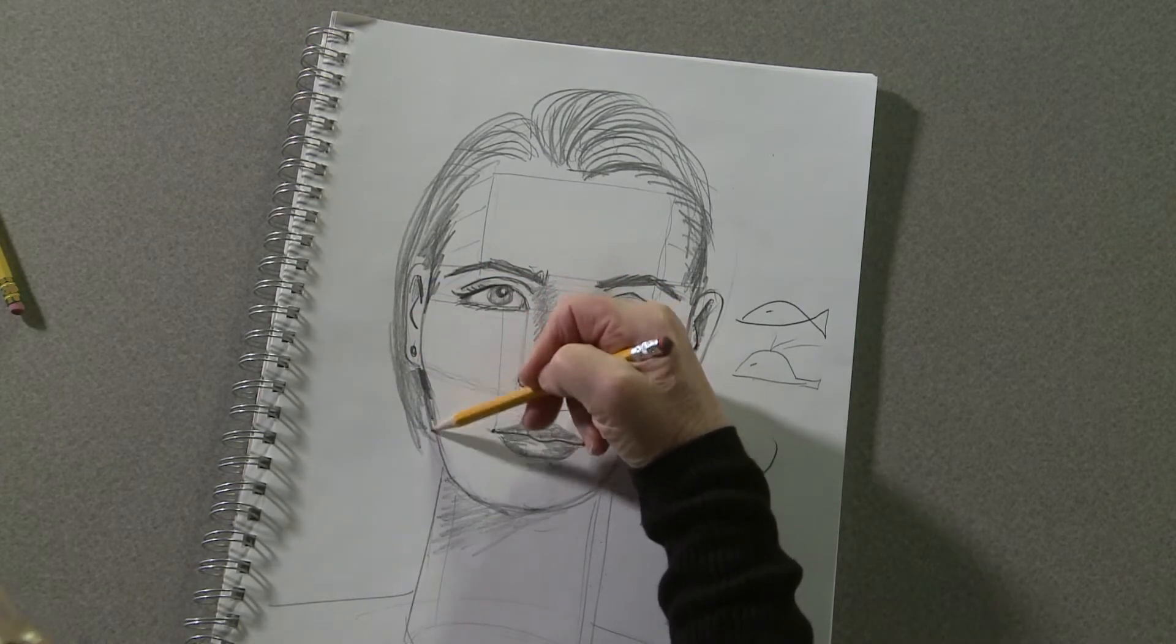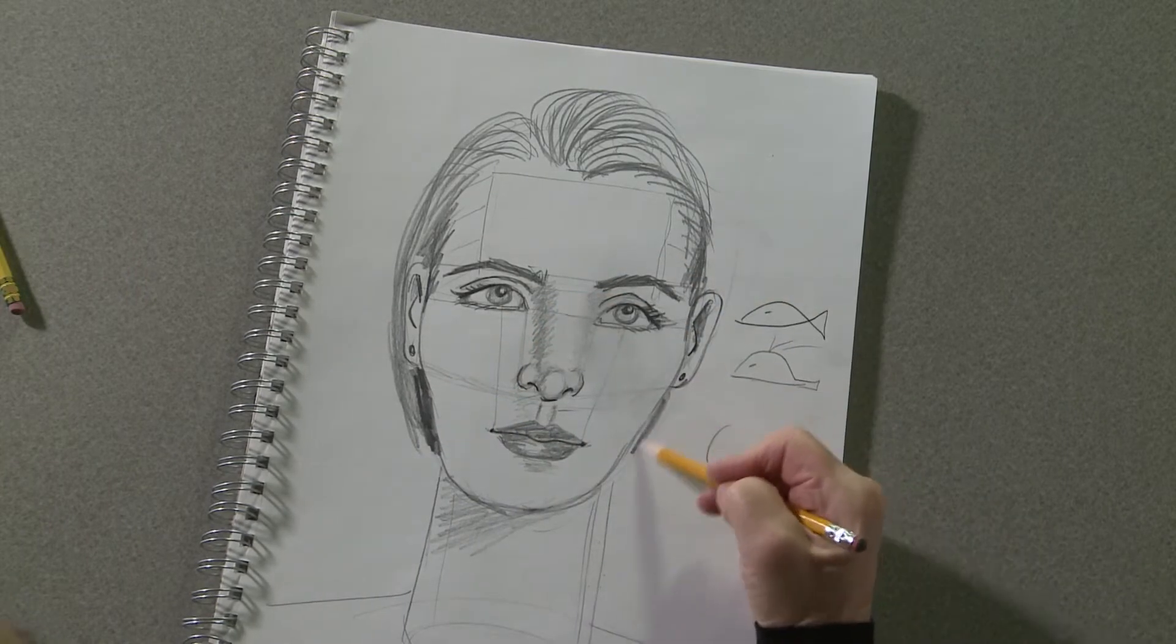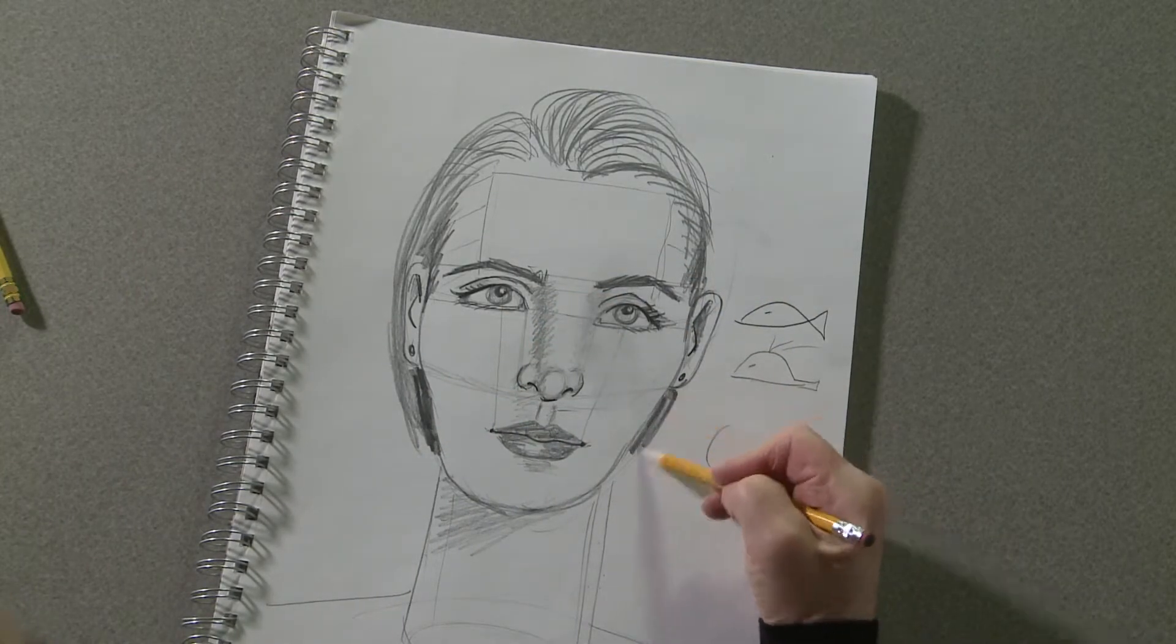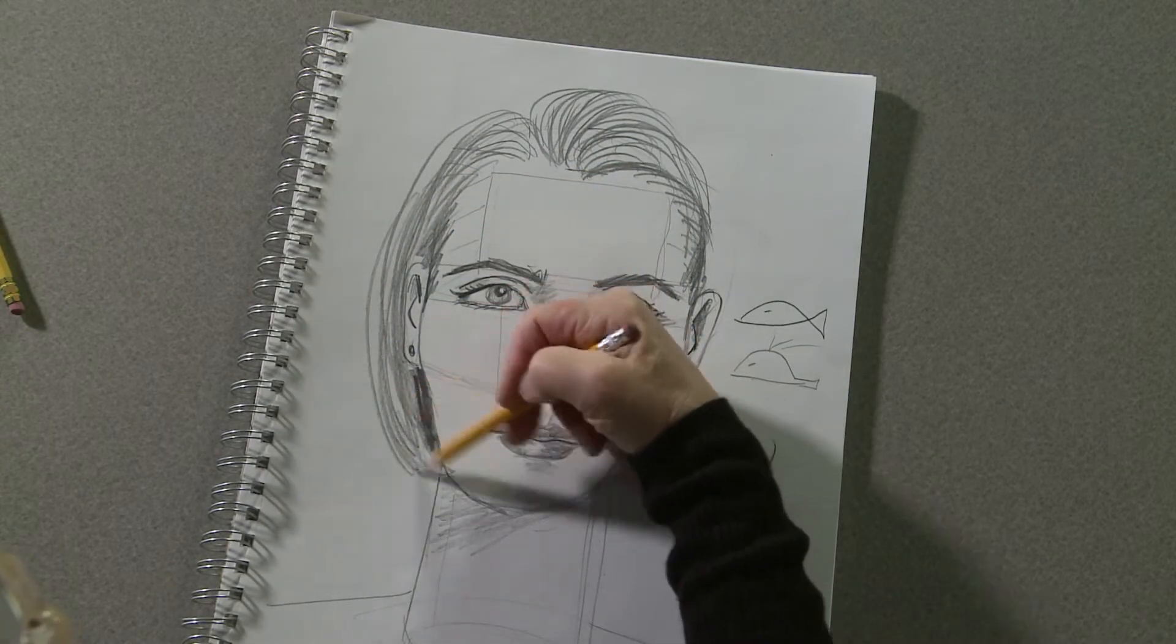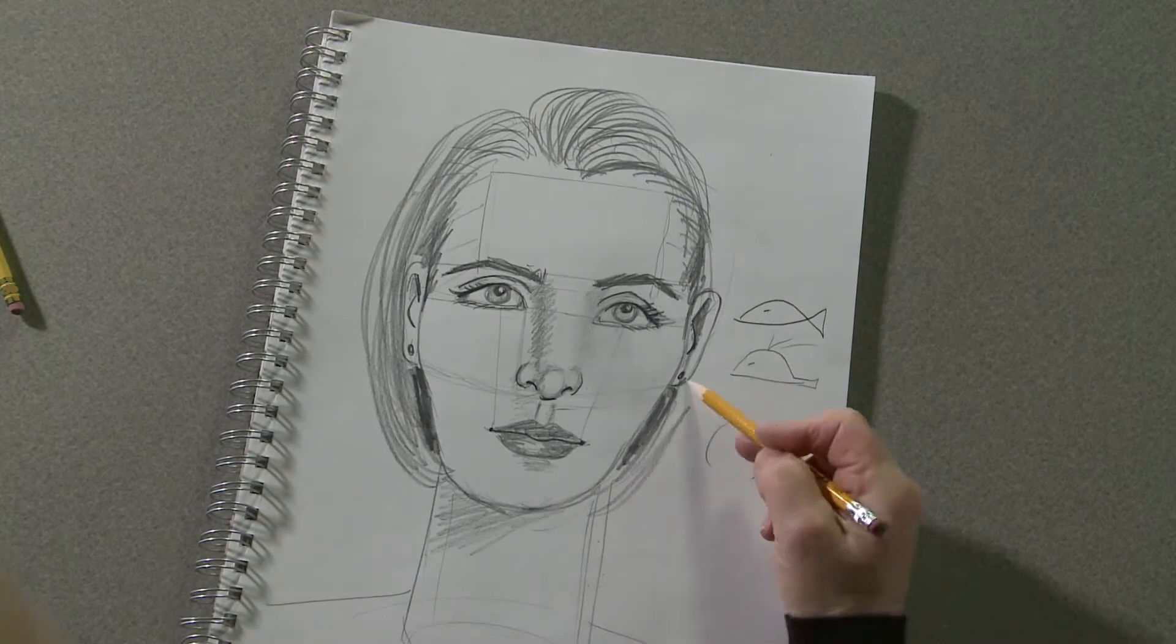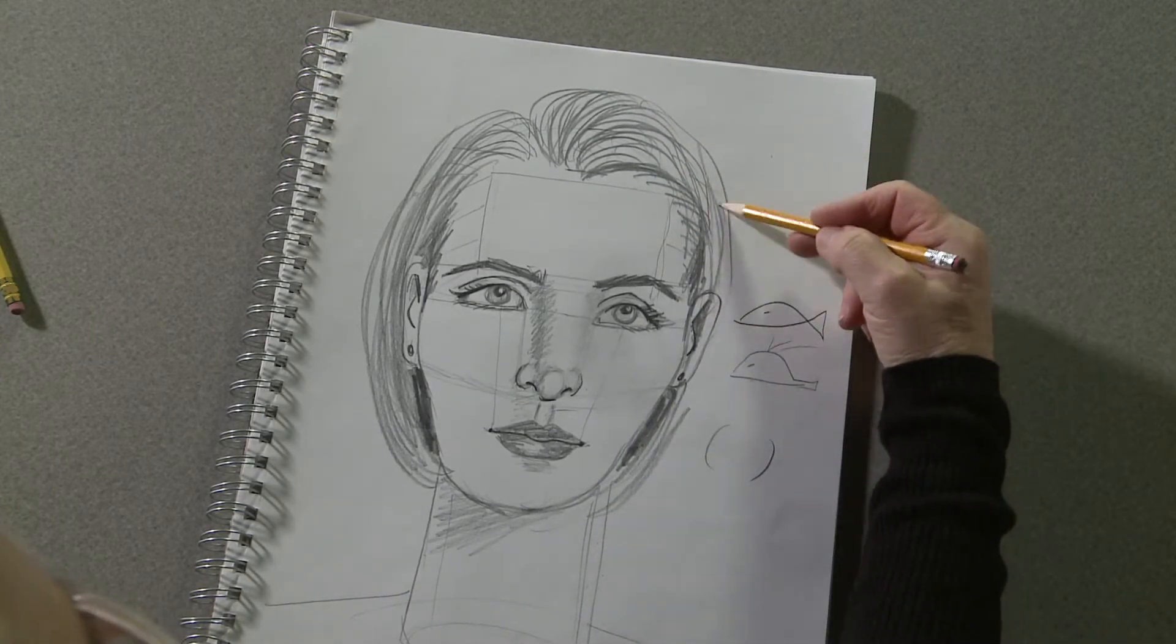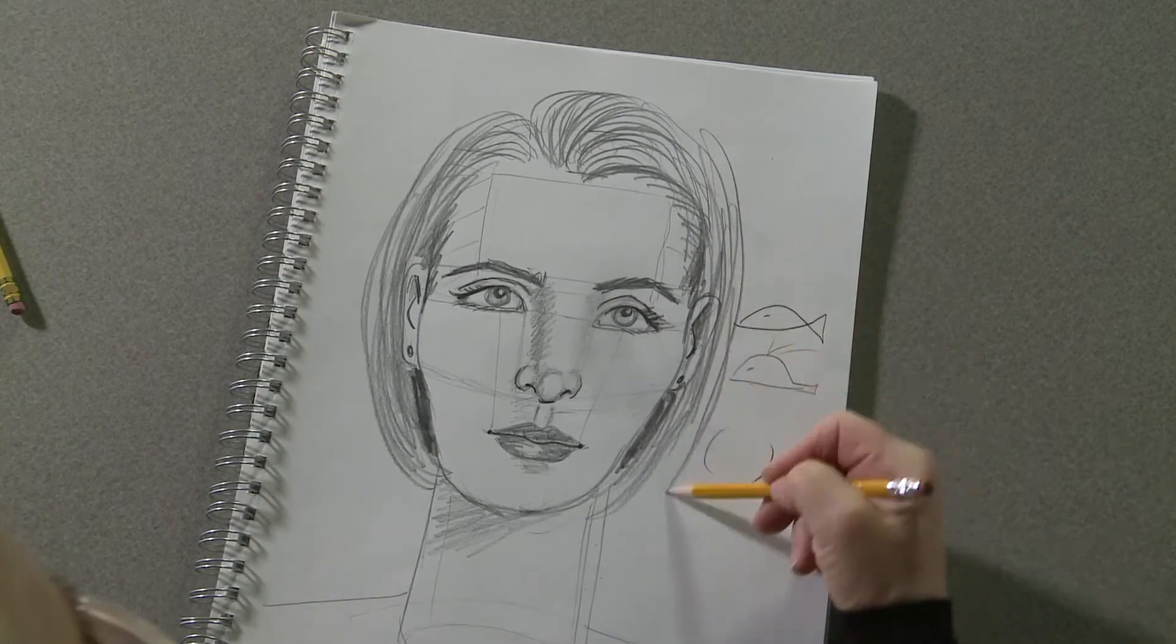To make the hair look like it has dimension, make it very dark right at the side of her face. And that way it will feel like the hair in the front, in front of her ear, has volume.